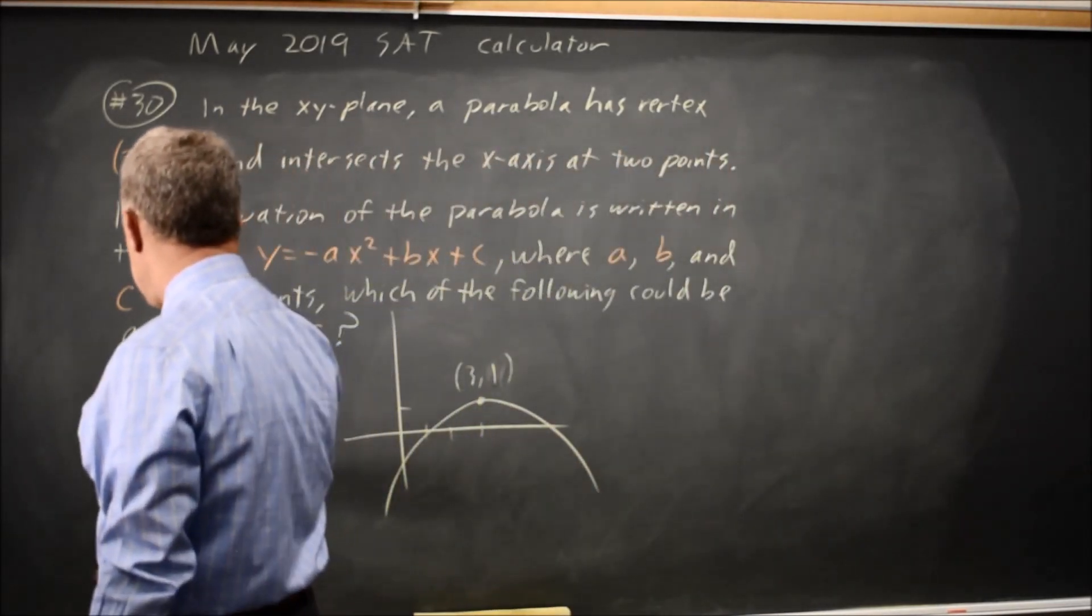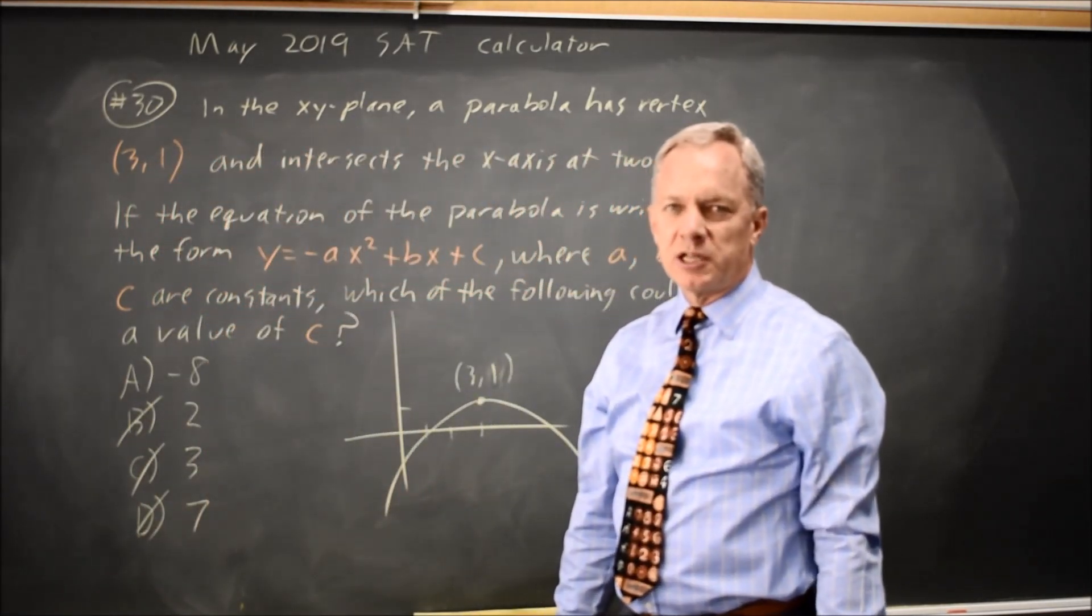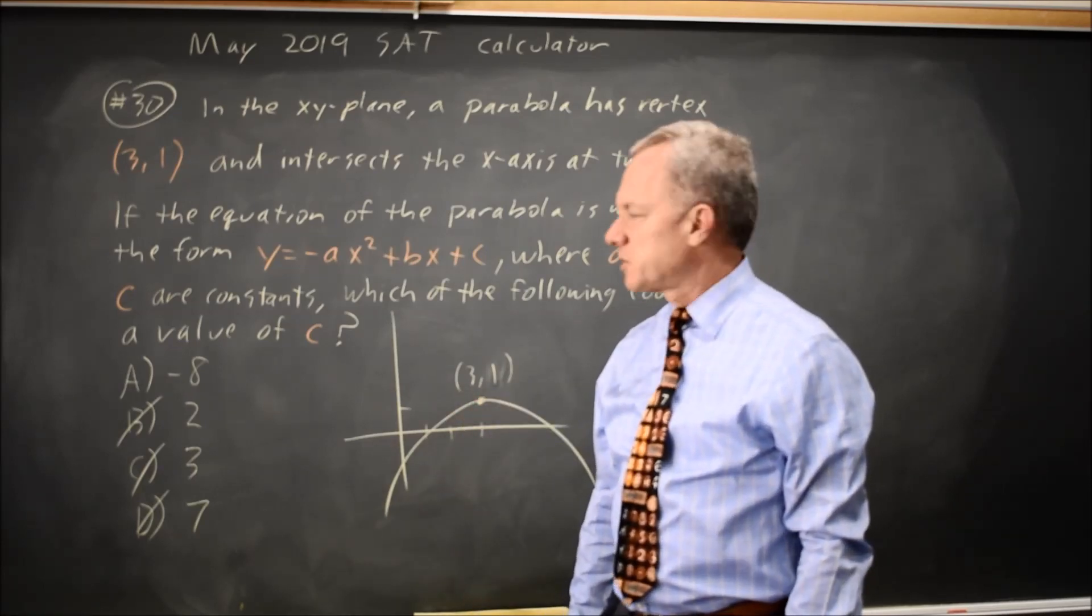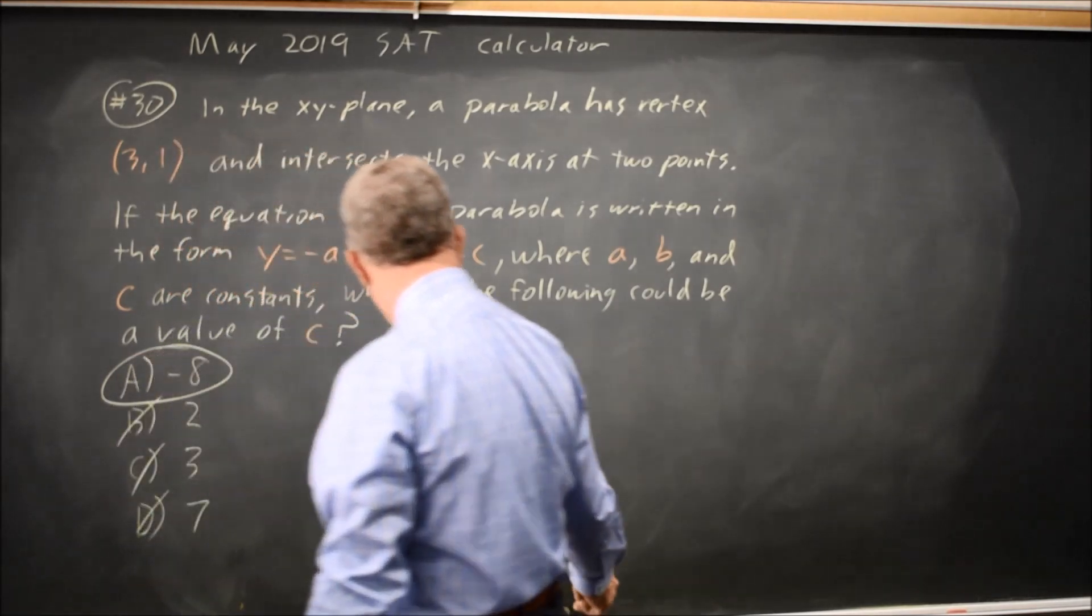So choices B, C, and D cannot be correct. Those values would place the y-intercept above the vertex, which would mean the parabola has no x-intercepts. So the only possible value of c is choice A, negative 8.